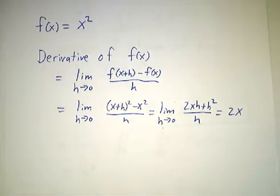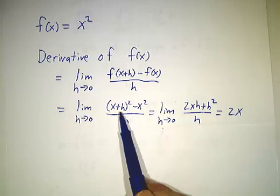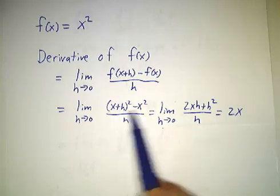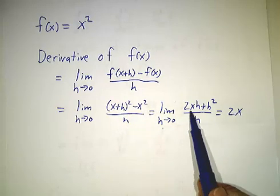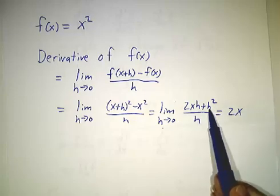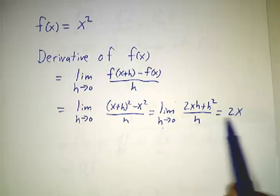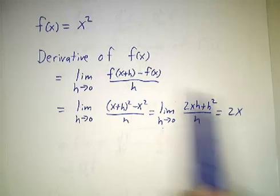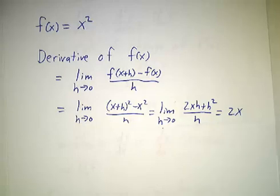And in the case of the function x squared, this was a pretty easy calculation. x plus h squared minus x squared gives you 2xh plus h squared, divided by h gives you 2x plus h, take the limit as h goes to 0, and we got 2x. So the derivative of x squared was 2x.